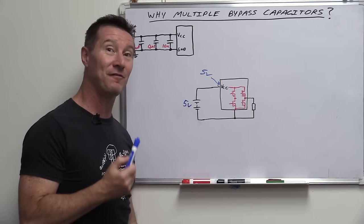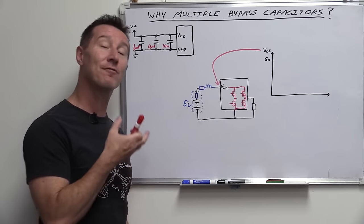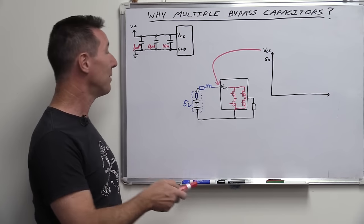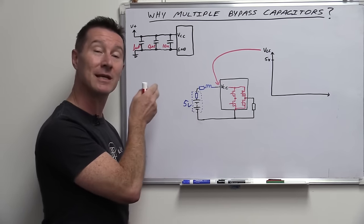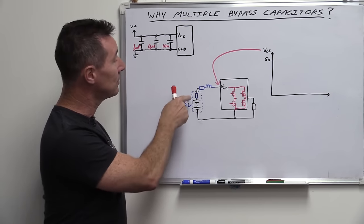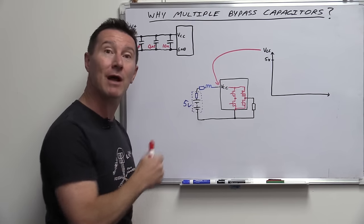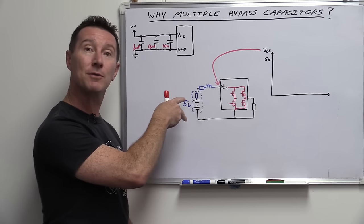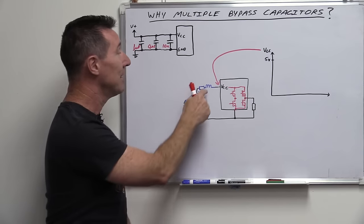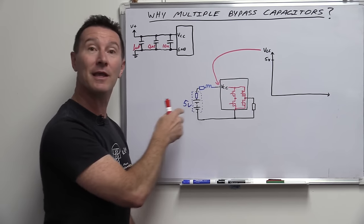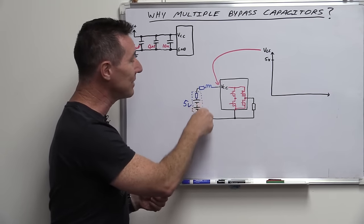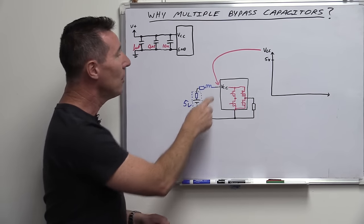Unfortunately, we don't live in an ideal world. In the real world, everything has resistance, inductance, and capacitance — all these parasitic elements. Your power supply will have some equivalent series resistance. Your PCB traces going from the power supply input connector to your chips are going to have resistance and inductance. Every piece of wire has inductance, no matter how small. There's also some capacitance down to ground, but we won't focus on that here.